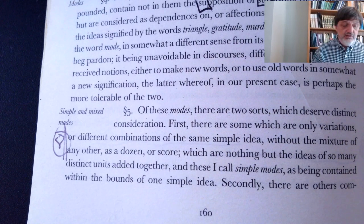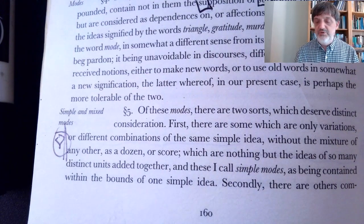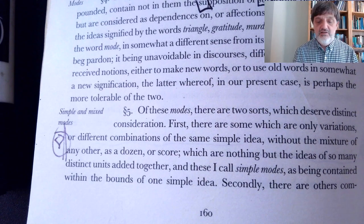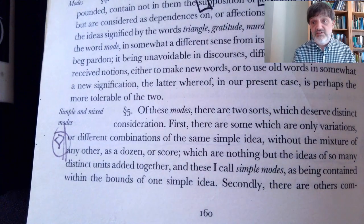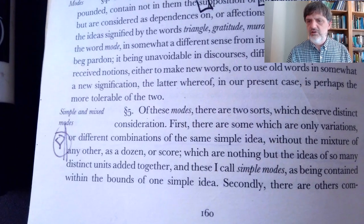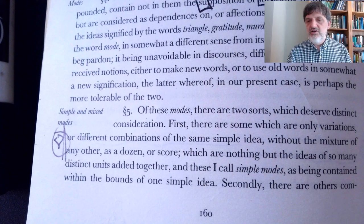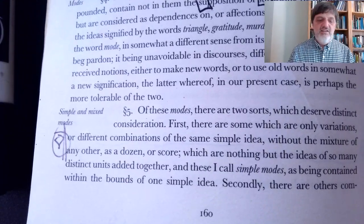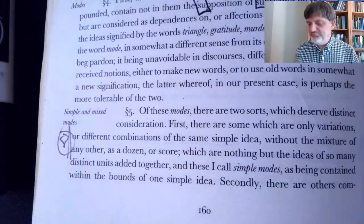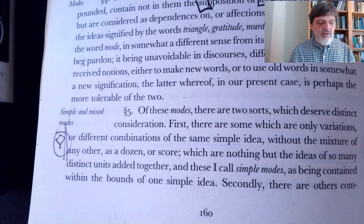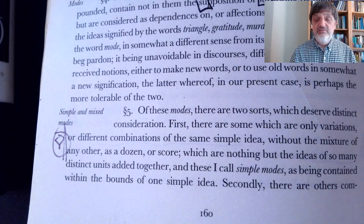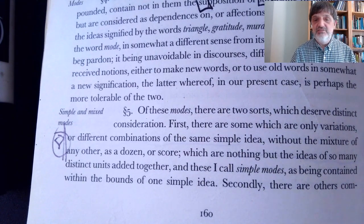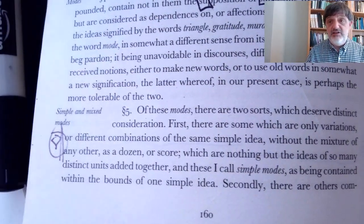Does it mean either/or — so they're either variations of the same simple idea or different combinations of the same simple idea? Or is it an apexegetical 'or,' where it just explains what was said before in different words — 'variations, or in other words, different combinations'? In favor of the second reading are the examples he gives: 'a dozen or a score, which are nothing but the ideas of so many distinct units added together.' A dozen is made from the unit repeated — those are different combinations of the same simple idea. Also, Locke's punctuation can't be fully trusted since they used commas more in his era than we do.